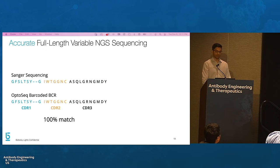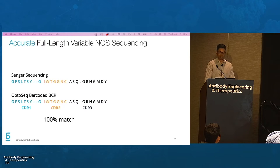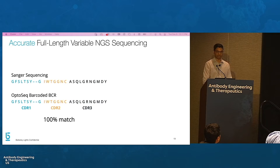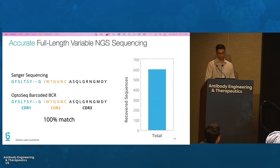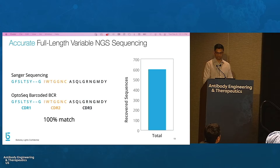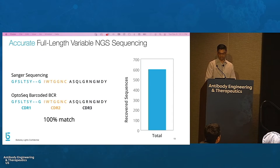Using a combination of fragmentation, NGS sequencing, and bioinformatic analysis, OptiSeq barcoded BCR also enables rapid and accurate sequencing of full-length variable regions of antibodies. The ability to reconstruct full-length sequences from short reads enables high-throughput sequencing of over a thousand antibodies from a single sequencing run. In the graph on this slide, we recovered over 500 paired heavy-light chain sequences from a single 96-well plate in a single MiSeq run.